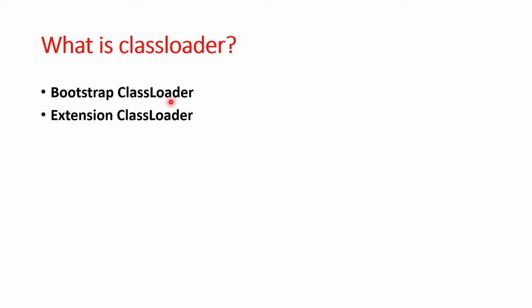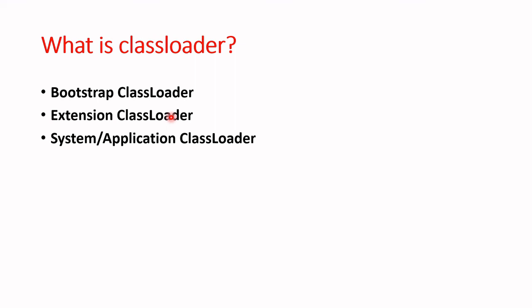Next we have the Extension Class Loader, which is a child class of the Bootstrap Class Loader and the parent class of the System Application Class Loader. The Extension Class Loader loads the jar files located in the Java home JRE extension directory. When you go to Java home, then JRE, then the lib folder, you will find an ext directory — all those extension jar files are loaded through the Extension Class Loader.